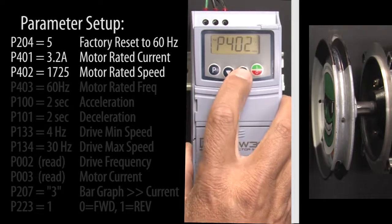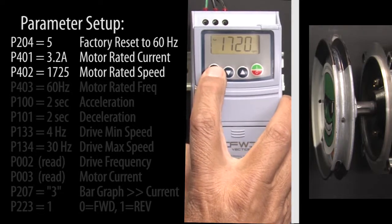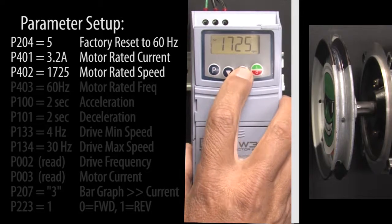Parameter 402 is the motor's rated speed, we'll modify that to 1725 and hit P to accept that.